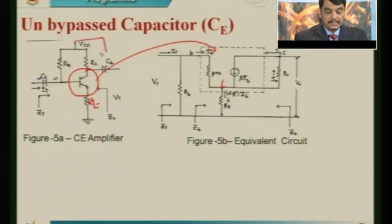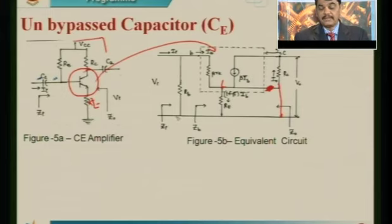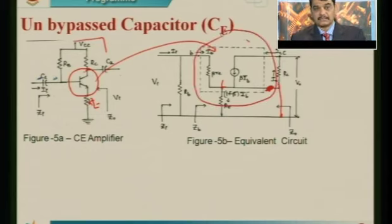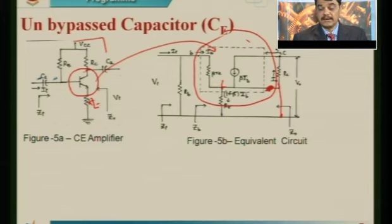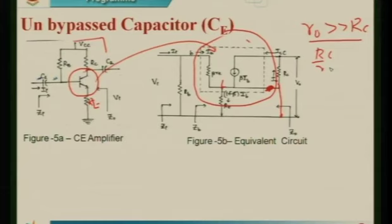When Vcc is grounded, Rc connects between the ground and collector. Rb connects between the base and collector. We need to determine input impedance, output impedance, voltage gain, and current gain. You must write this circuit diagram — no need to remember the entire circuit diagram, only how to transfer from a wiring circuit to the equivalent circuit. Remember this block: in the earlier class we defined that R naught is in parallel with beta times Ib, where R naught is much greater than Rc. Hence, we neglect the effect of R naught, since the ratio Rc/R naught is almost less than 10% or 0.1.